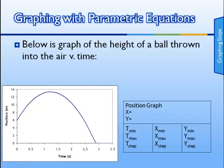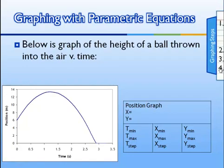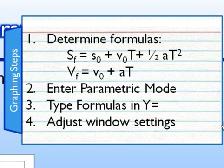The steps for creating a graph are going to be this. First, we'll determine what sort of formulas we'll use. For creating a position versus time graph, we'll probably use the s_f = s_0 + v_0*T + 1/2*a*T^2 formula. For creating a velocity versus time graph, we'll use the V_f = V_0 + a*T formula.